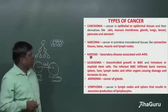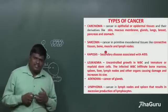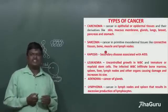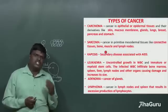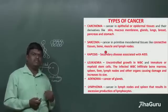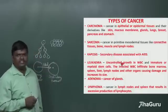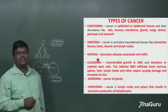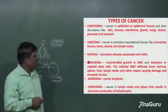Kaposi's sarcoma is a secondary disease associated with AIDS. If a person is having acquired immunodeficiency syndrome, that is HIV infection, they will develop this type of secondary disease, called Kaposi's. It is also a cancerous type.